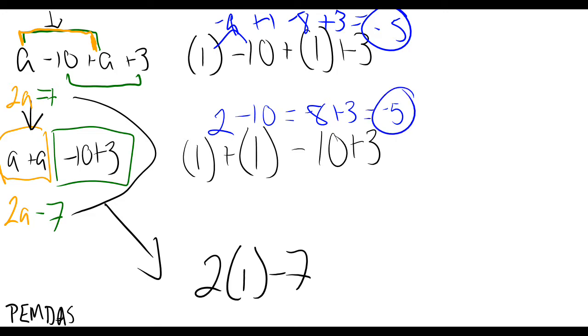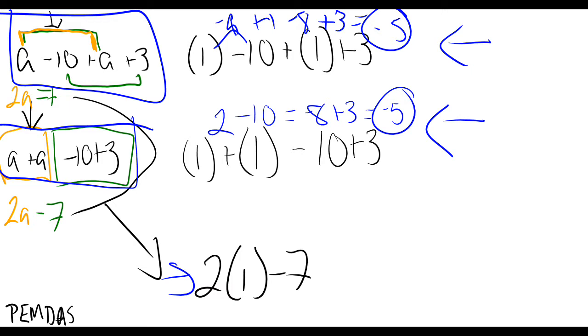So this will show you, this here shows you that this expression and this expression are the same thing even though the order is different. So if our simplification is right, then both of these methods, both of these top and bottom, are correct. Okay, so now back down to here. 2 times 1 is 2 minus our 7 equals negative 5. So that checks out.